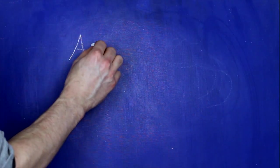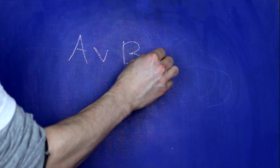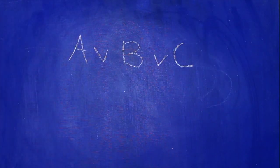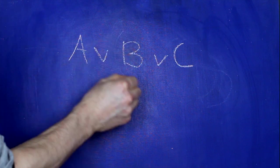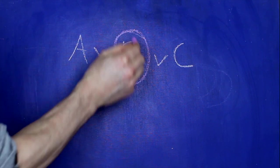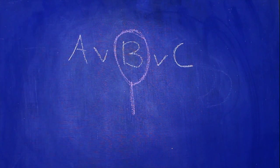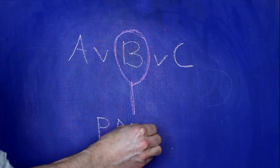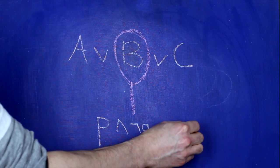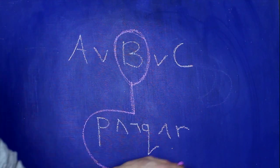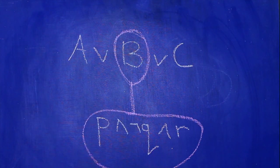Here's the definition of disjunctive normal form again. A sentence is in disjunctive normal form when it's a disjunction, and each of its disjuncts is a conjunction, and each of those conjuncts is a literal.